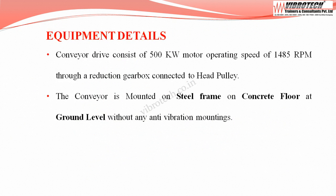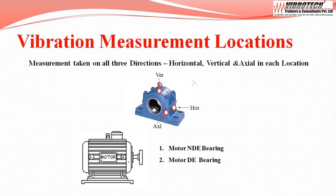The conveyor drive we are going to see consists of a 500kW motor operating at a speed of 1485rpm through a reduction gearbox connected to a head pulley. The conveyor is mounted on a steel frame on a concrete floor at ground level without any anti-vibration mountings.